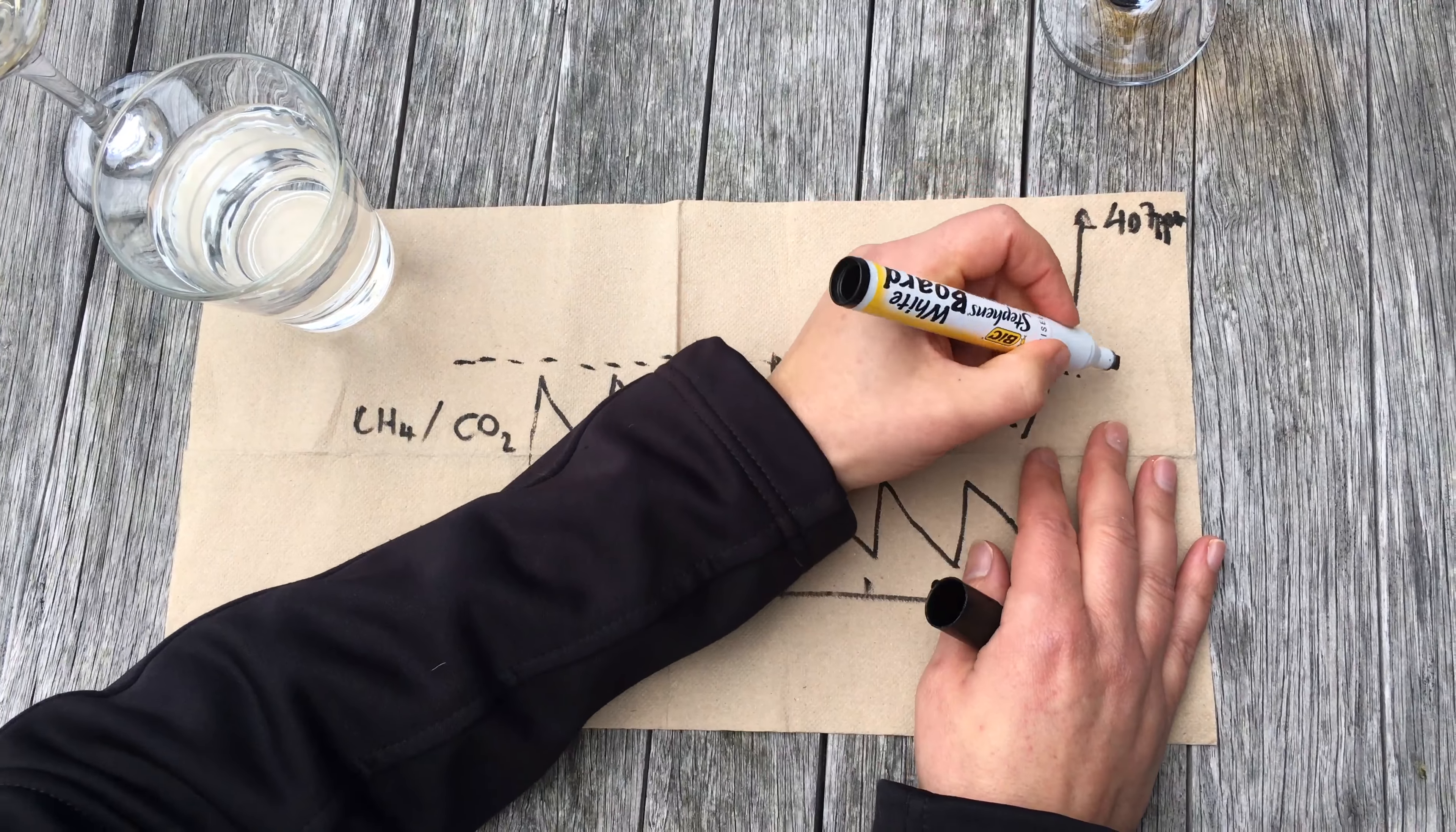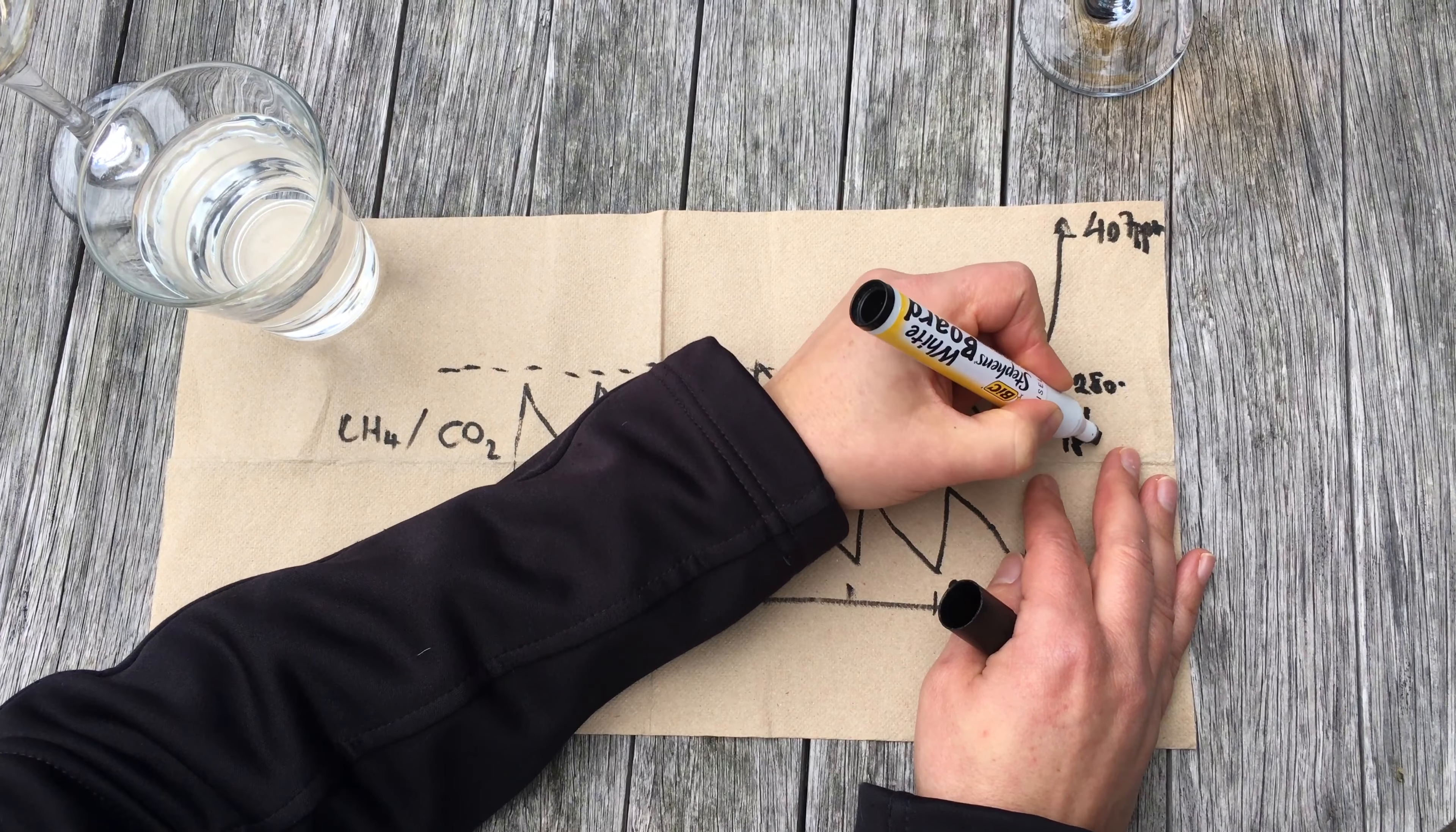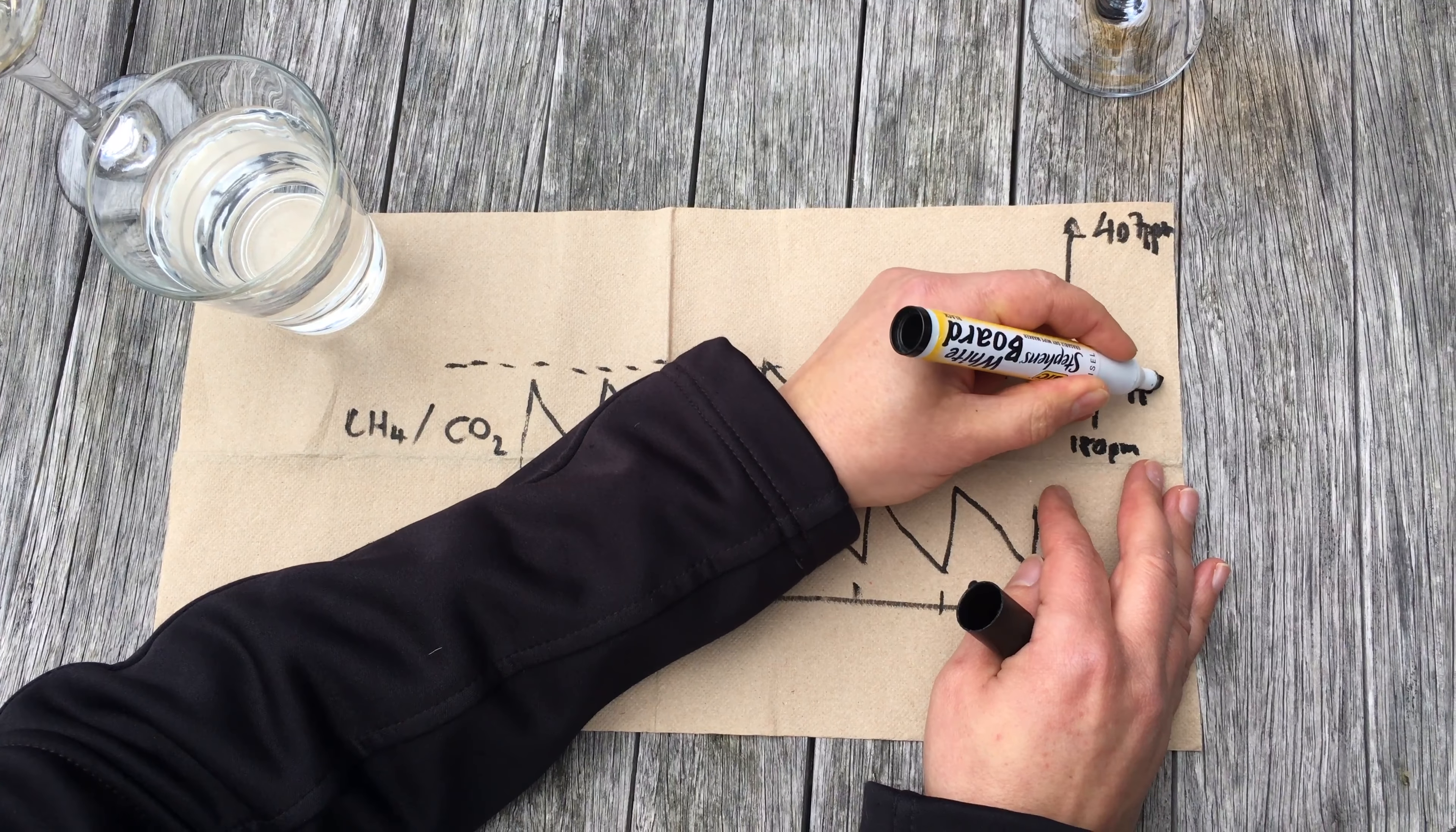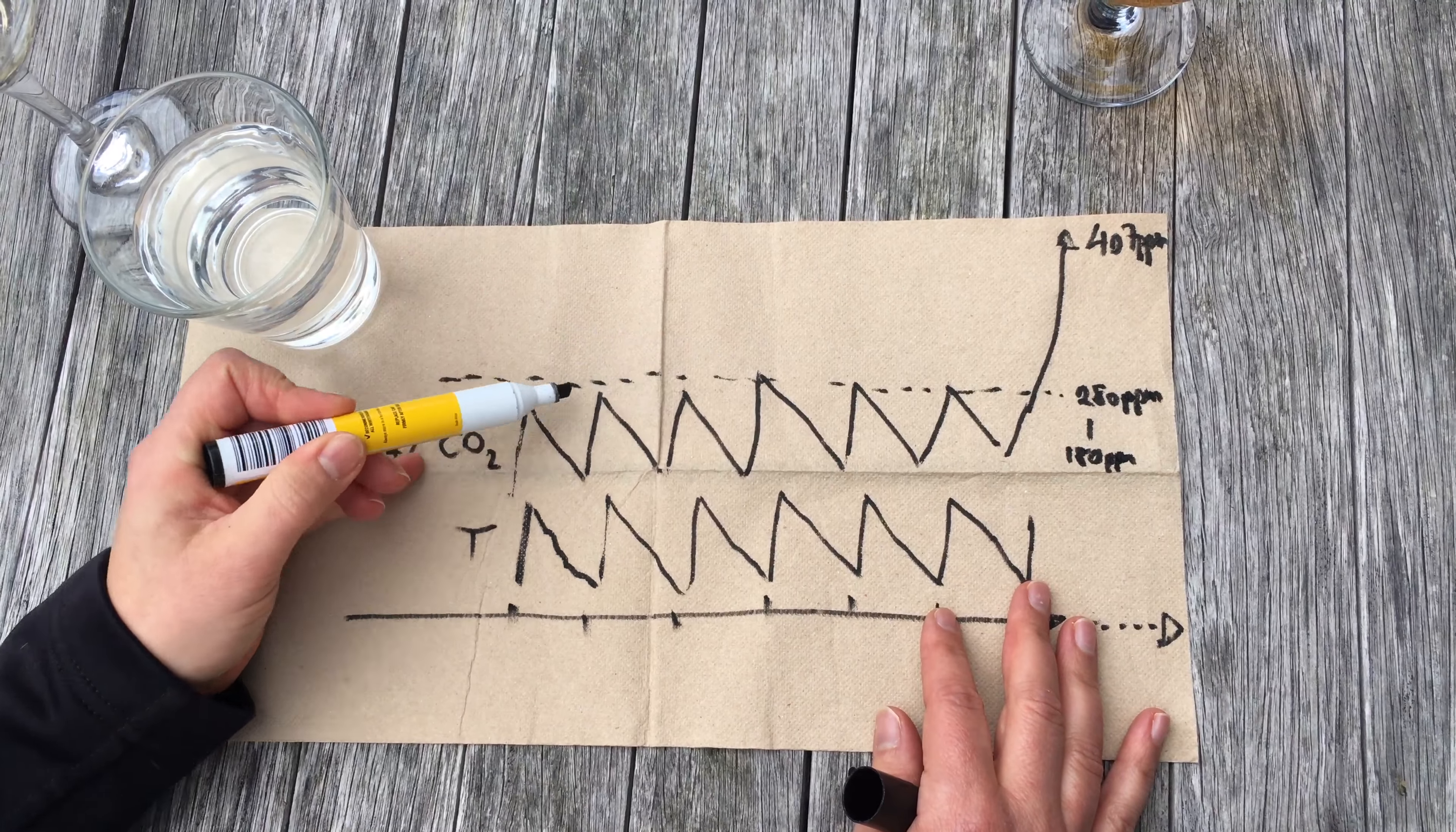CO2 ranged from about 280 ppm at a maximum to 180 ppm at a minimum, which is really interesting. When we now look at this longer time frame, we see our anthropogenic emissions are much higher than anything that we have seen in the last million years.